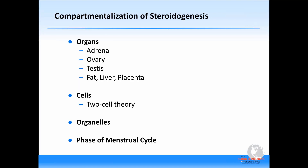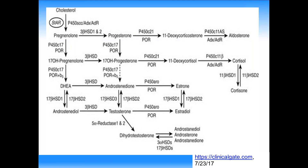Within the ovary, there are multiple layers of compartmentalization. The well-known two-cell theory — involving thecal and granulosa cells — will occupy considerable time today. Specific organelles within the cell are also involved in steroidogenesis, and there is variable production and changes in steroidogenic enzymes throughout the menstrual cycle that are important even to the practicing reproductive endocrinologist.